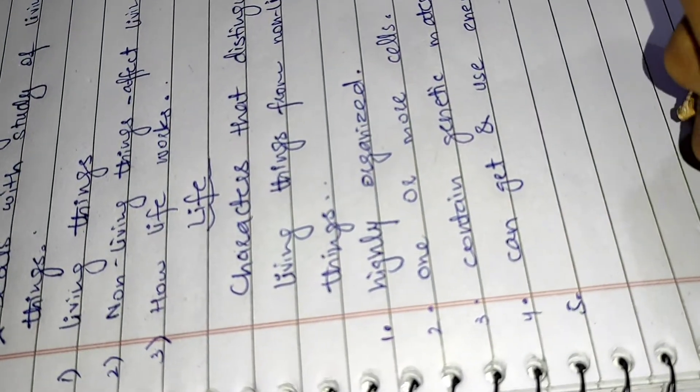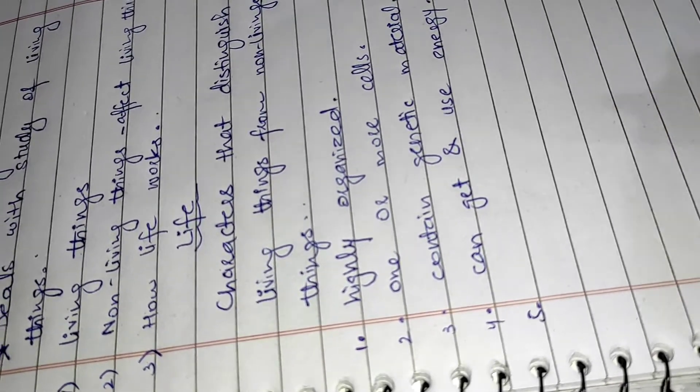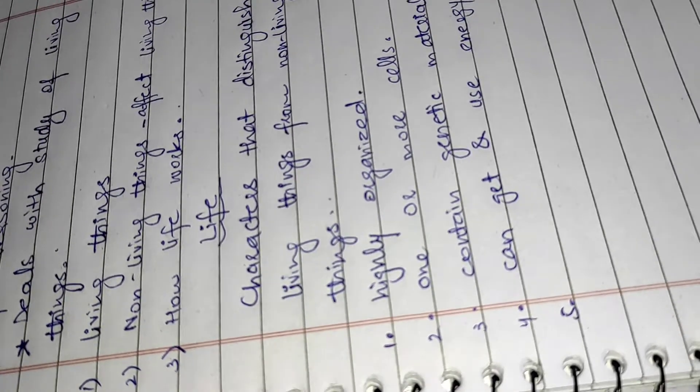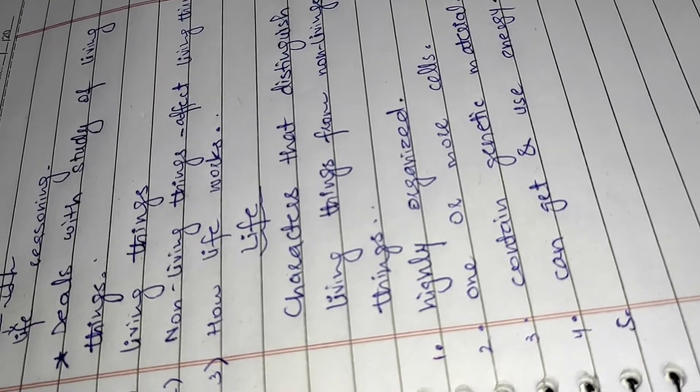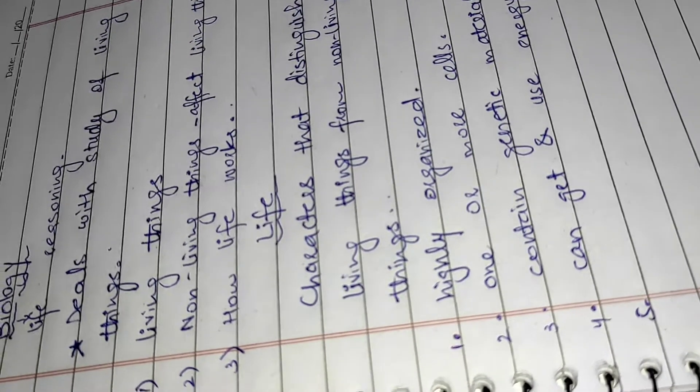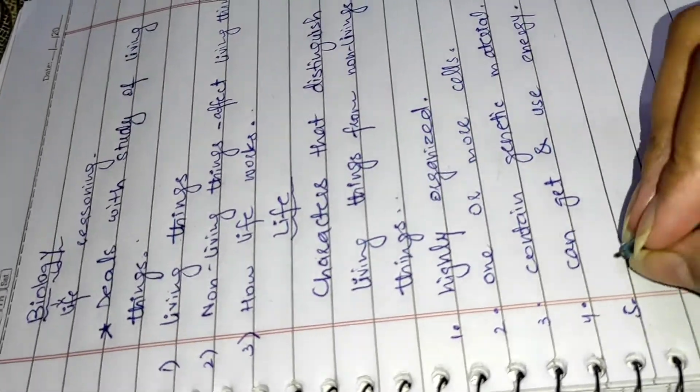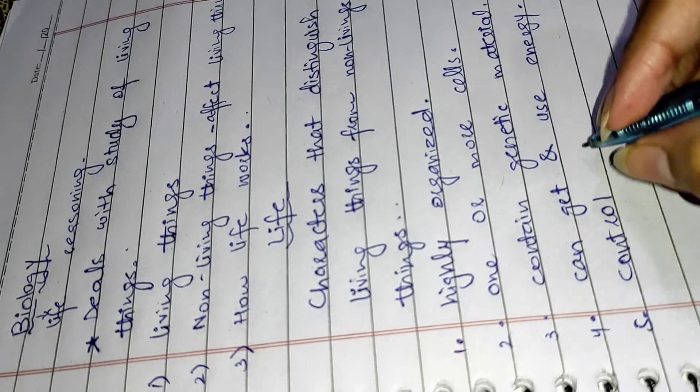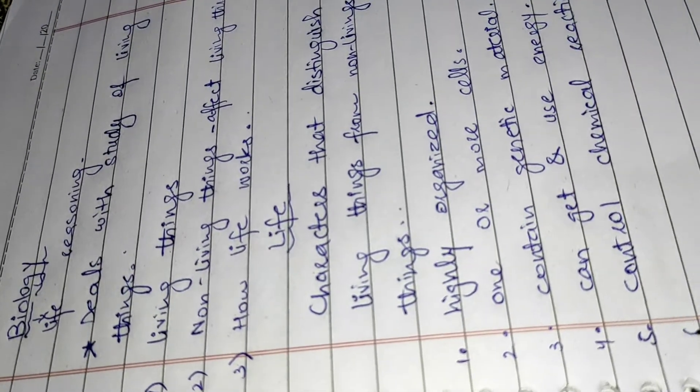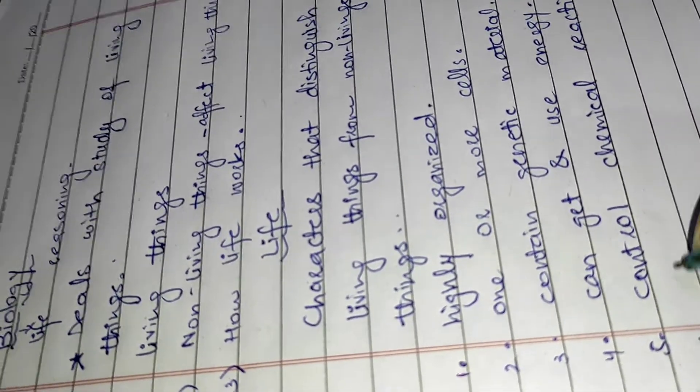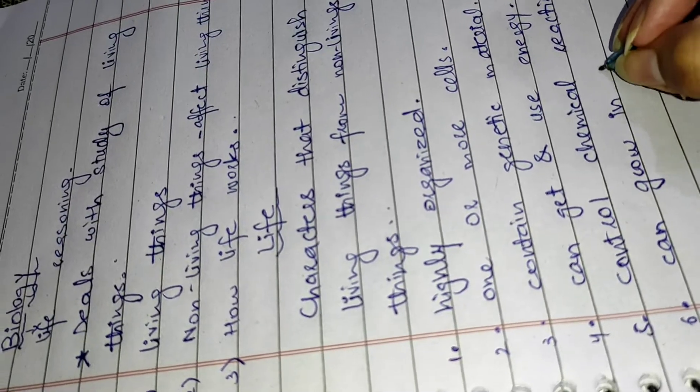Next one is they can get and use energy. The next point is that they control different chemical reactions in their body. Metabolism is different chemical reactions. We control our body.